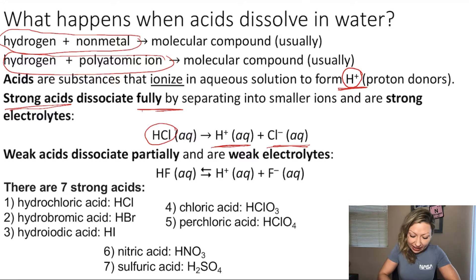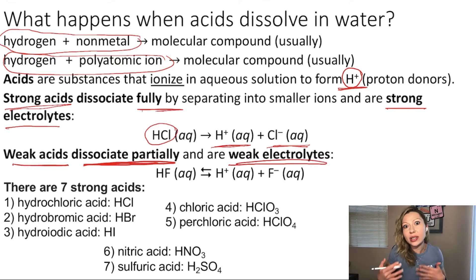And the weak acids dissociate only partially. So strong acids are actually strong electrolytes, and weak acids are actually weak electrolytes. And how can you show that an acid is only dissociating partially? Well, using these double arrows.